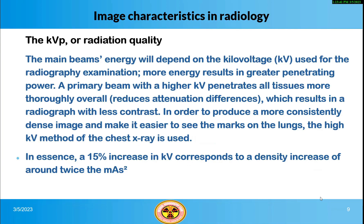The main beam's energy will depend on the kilovoltage (kV) used for the radiography examination — more energy results in greater penetrating power. A primary beam with a higher kV penetrates all tissues more thoroughly overall, reduces attenuation differences, which results in a radiograph with less contrast. In order to produce a more consistently dense image and make it easier to see the marks on the lungs, the high kV method of the chest x-ray is used. In essence, a 15% increase in kV corresponds to a density increase of around twice the mAs.